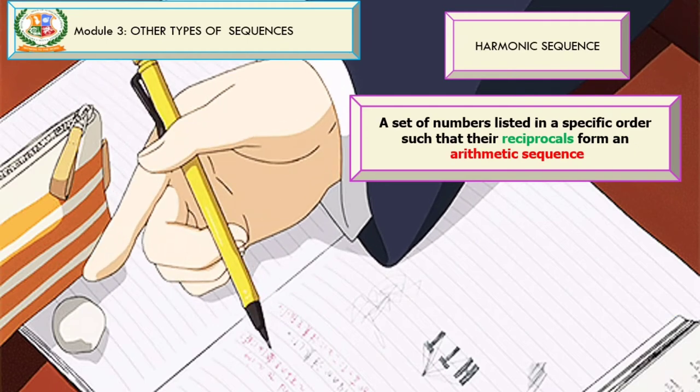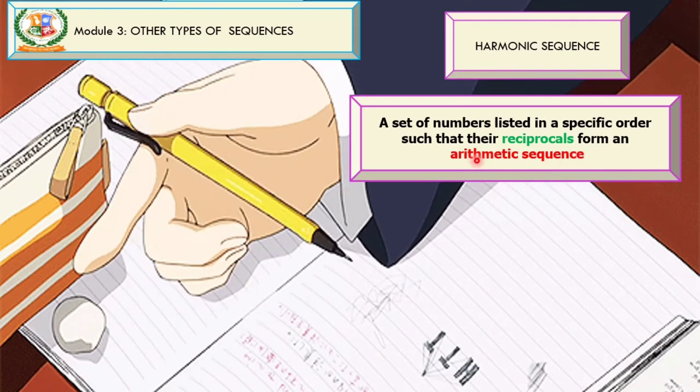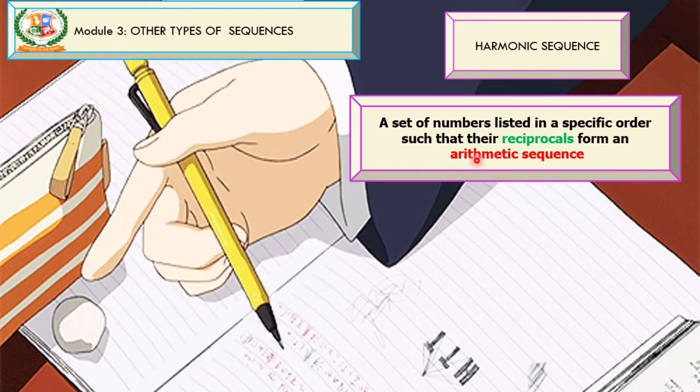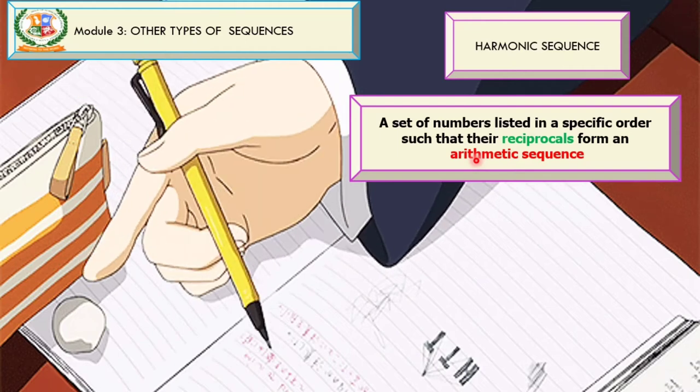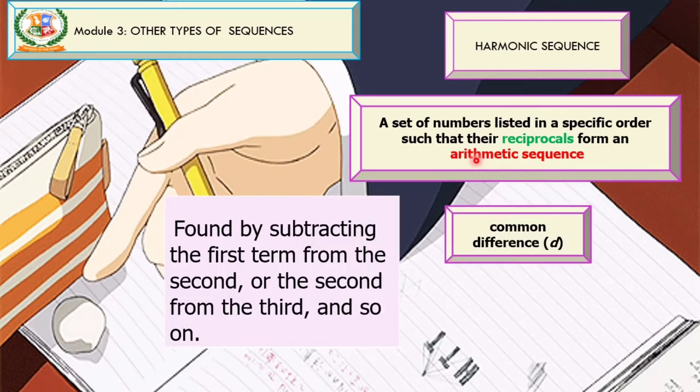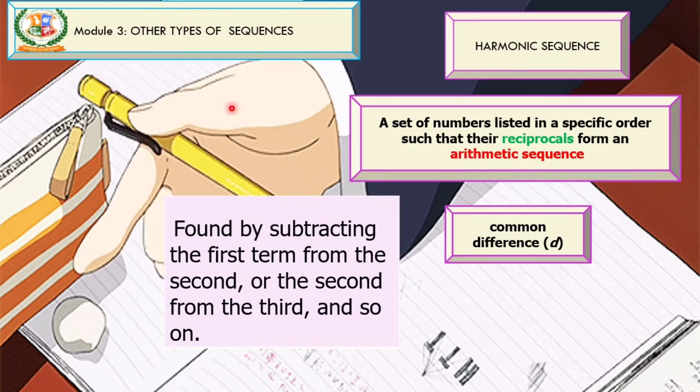So let us first discuss harmonic sequence. Do you remember last time that we have discussed about arithmetic sequence? So arithmetic sequence is also in relation with the harmonic sequence. Because harmonic sequence is a set of numbers listed in a specific order such that their reciprocal form an arithmetic sequence. So I have two words here. Reciprocals and arithmetic sequence. Reciprocals, so kung sa Tagalog, kabaliktaran, babaliktarin natin yung fraction. How about arithmetic sequence? Remember that we have to remember in arithmetic sequence the common difference. So how do you get the common difference? So it is found by subtracting the first term from the second or the second from the third and so on. We'll be using this for our harmonic sequence.